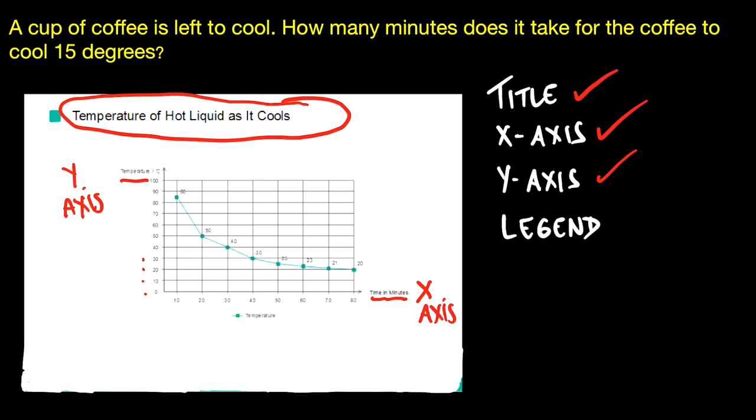And then finally you want to look at the legend. So the legend is telling you what those little green boxes represent, and you can see there that they represent temperature. So do this every single time that you have to read a graph so that you don't waste time and execute immediately.